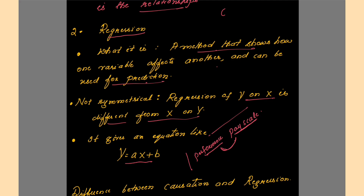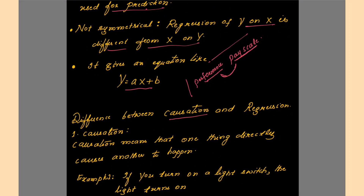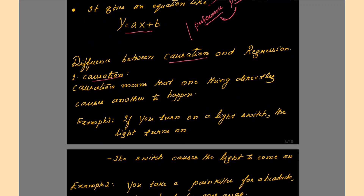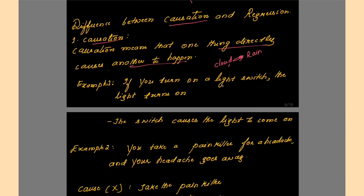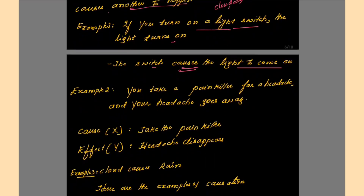Correlation coefficient tells us how strong the relationship is and its direction. Now there is one more term: causation. Causation means that one thing directly causes another to happen. For example, clouds will result in rain — there is a cause-and-effect relationship. If you turn on a light switch, the light will turn on — the switch causes the light to come on. If you take a painkiller for a headache and your headache goes away, the cause is taking the painkiller and the effect is the headache disappearing. This is causation.